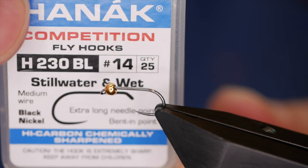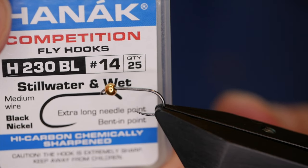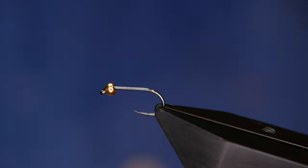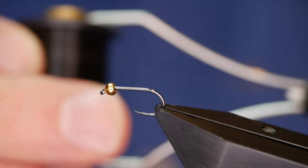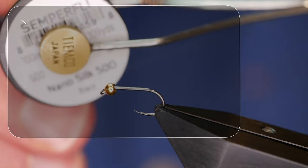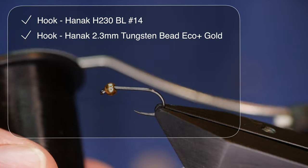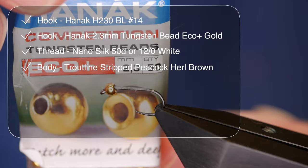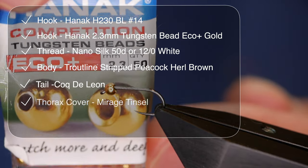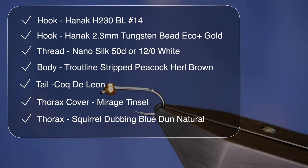The hook in the vise is a Hanak H 230 barbless hook, size 14, on a medium wire finished in black nickel. The thread I'm using today is nano silk from Sempify, black, at 50 denier or 12 aught. I've already put a 2.3 millimeter countersunk tungsten bead on the hook.